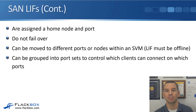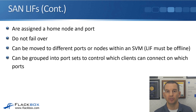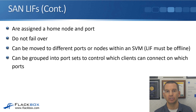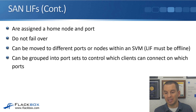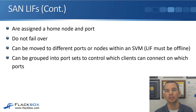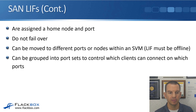With SAN LIFs it's different — the client doesn't just know about one LIF and one IP address. The client will learn about all of the different SAN LIFs, so it knows about the different paths and the different IP addresses or WWPNs. Because the client knows about all the different paths and targets, it can fail over itself if a path goes down. There's no need for a SAN LIF to fail over to a different port. So SAN LIFs do not fail over; NAS LIFs do.